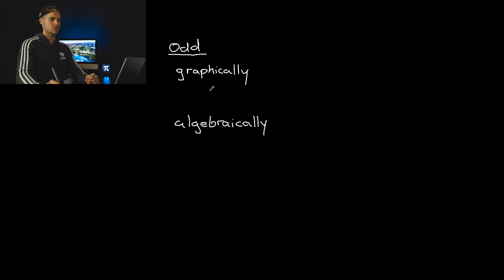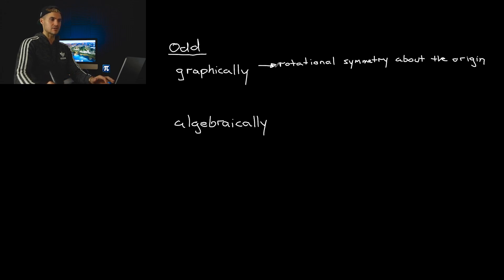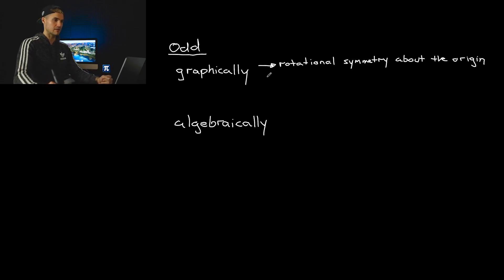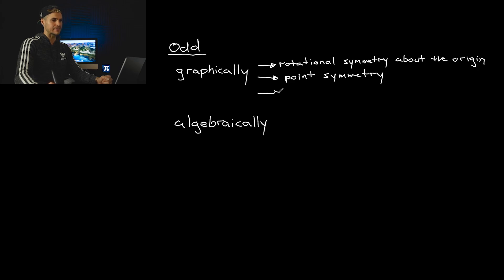Now what about odd functions? A common description you'll see in textbooks is that an odd function is rotationally symmetrical, or has rotational symmetry about the origin. Personally I don't love that description because it sounds confusing at first. Another term you might see is point symmetry, where that point is the origin. Even functions had axis symmetry; odd functions have point symmetry.